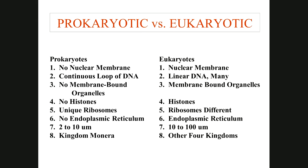Differences between prokaryotic and eukaryotic cells: prokaryotes have no nuclear membrane — their DNA floats free in the cytoplasm. Eukaryotes have a membrane-bound nucleus called the nuclear envelope. Prokaryotes have one chromosome and it's a circular loop; eukaryotic chromosomes are linear and numerous — humans have 46. Prokaryotes have no membrane-bound organelles; eukaryotes have membrane-bound organelles like the nucleus, lysosomes, endoplasmic reticulum, and Golgi.